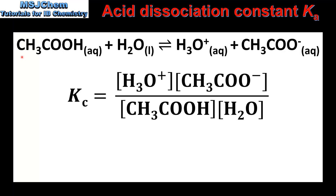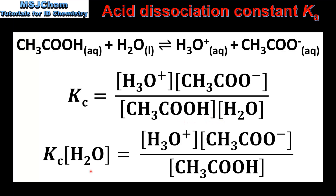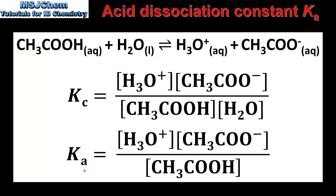Here we have the reaction from the previous slide: ethanoic acid reacts with water to form the hydronium ion and the ethanoate ion. As this is an equilibrium reaction we can write an expression for the equilibrium constant Kc, with the concentrations of hydronium and ethanoate ions in the numerator, and the concentrations of ethanoic acid and water in the denominator. The concentration of water remains more or less constant, so it becomes part of the Kc, giving us a new expression which is the Ka — the acid dissociation constant.